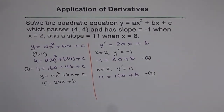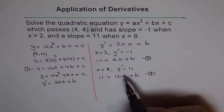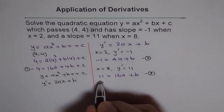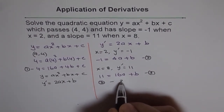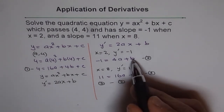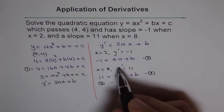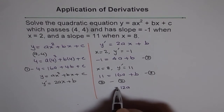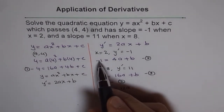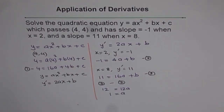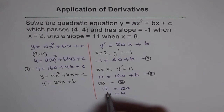We have three equations. We can solve for a and b using Equations 2 and 3. Taking Equation 3 minus Equation 2: b and b cancel, and 16a minus 4a gives 12a. So 12a equals 11 minus minus 1, which is 12. Therefore a equals 1. That is our solution for variable a.